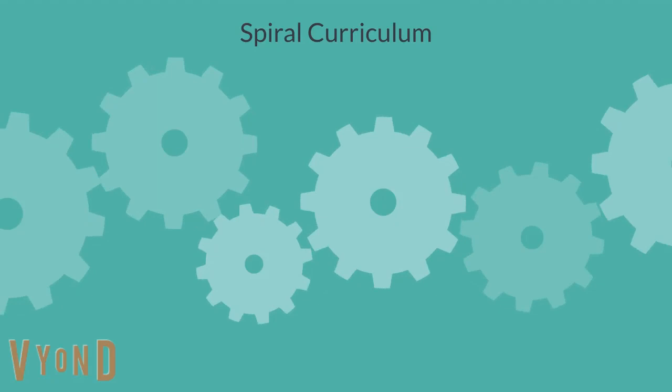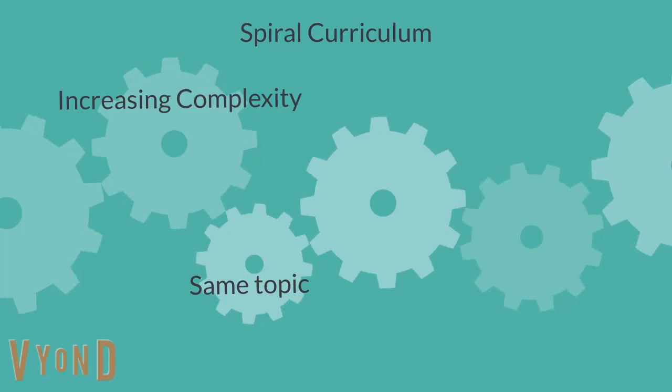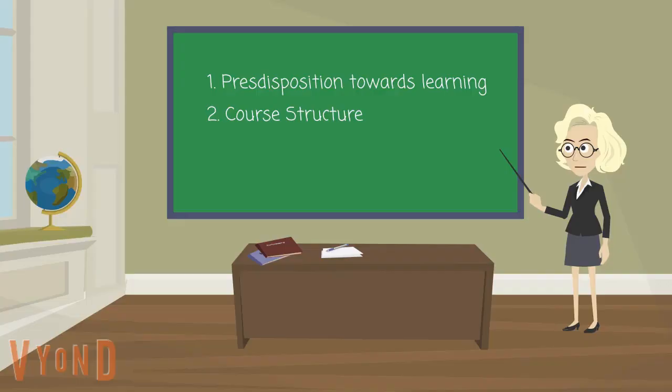For example, the spiral curriculum. This can be defined as a course of study in which students will see the same topic throughout their school career, with each encounter increasing complexity and reinforcing previous learning.